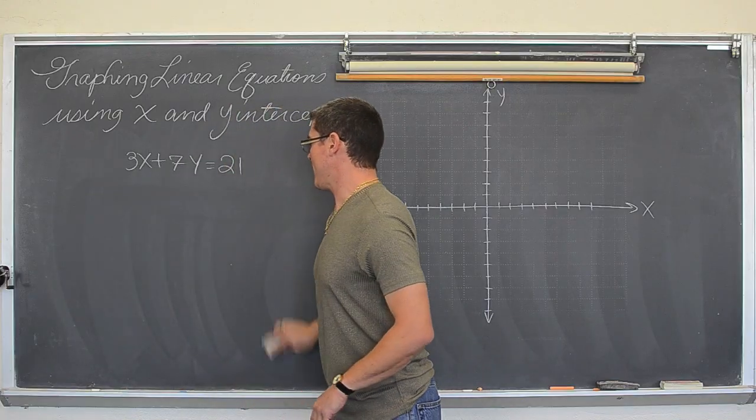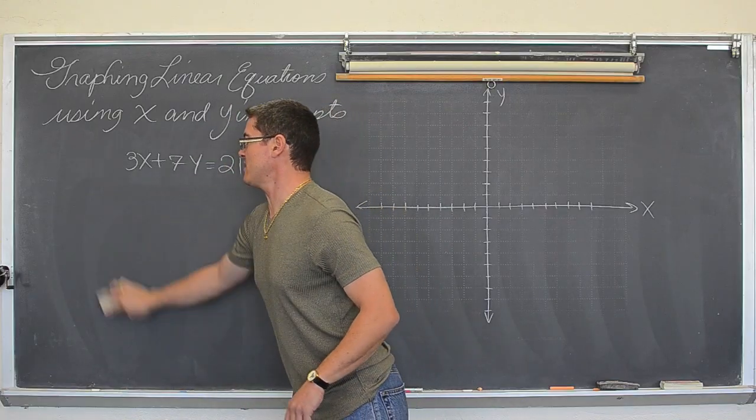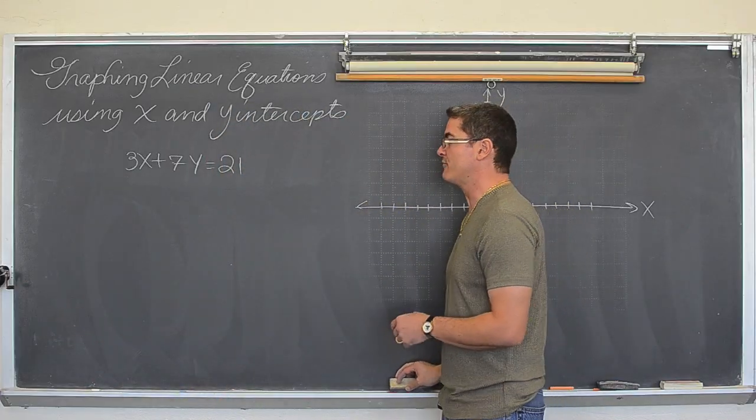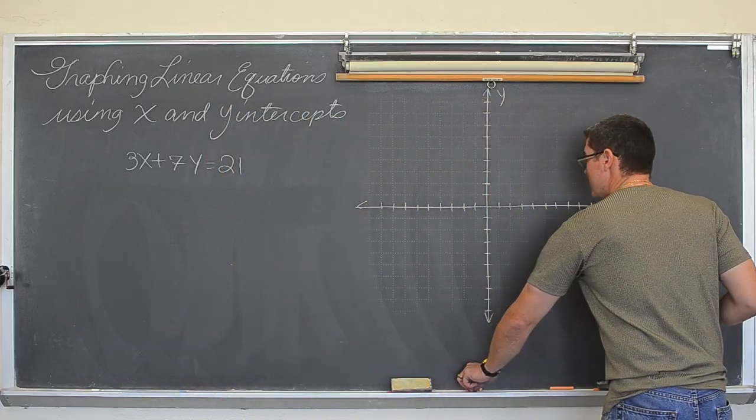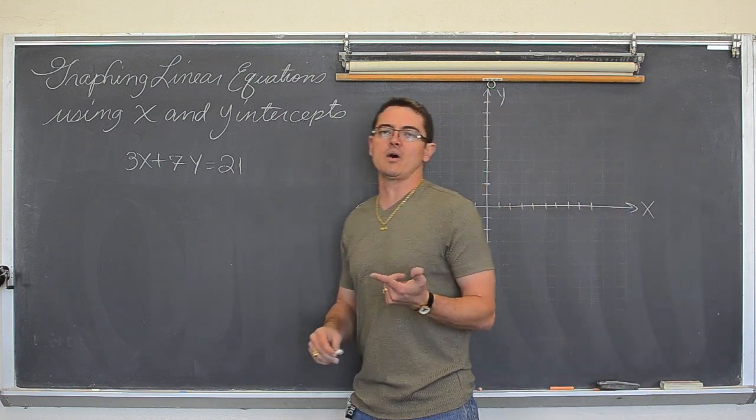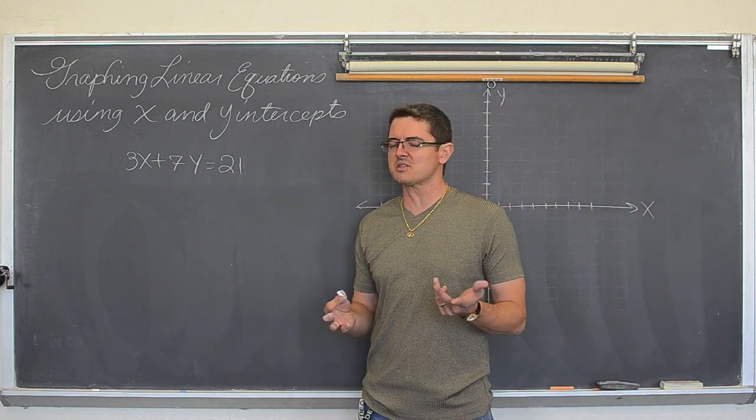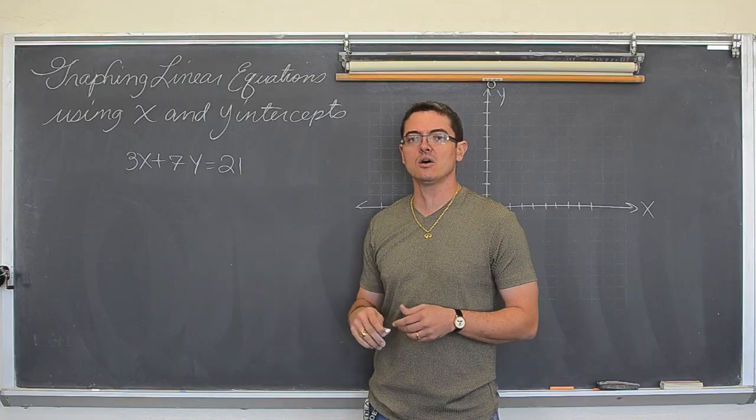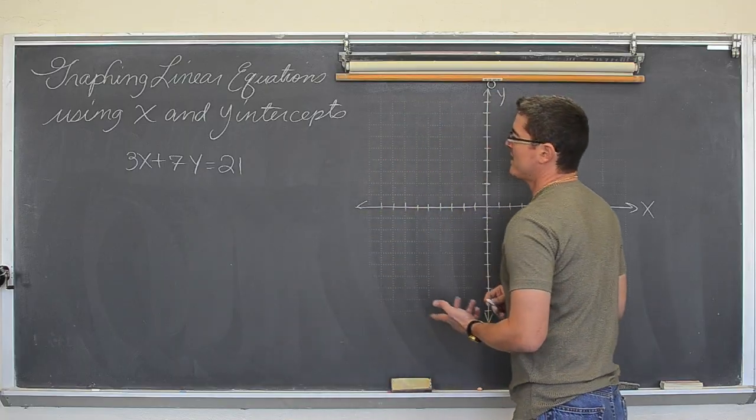And really for graphing, I don't really care so much that it is standard form. I just note that the y is not alone. If y was isolated, then we could just use the slope and the y intercept. But this one is not. So, how do you find the x intercept?